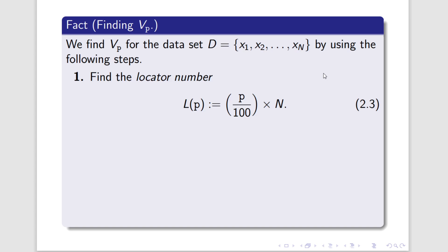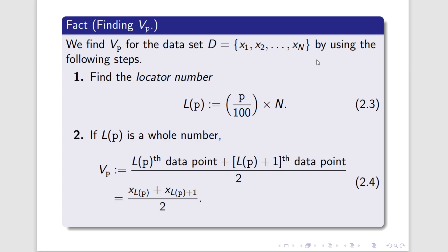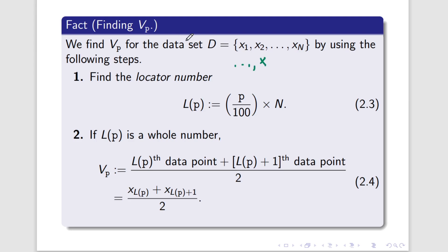Step 1: we need the locator number LP. LP is found by taking P, dividing it by 100, and then multiplying the result by N. If we do that, there are two possibilities. LP might be a whole number. If LP is a whole number, then we need to find the LPth and the (LP+1)th data points of D. Since D is organized from least to greatest, we just start counting X1, X2, X3, and keep going until we reach XLP and then the next data point, X(LP+1). We take those two data points, add them together, divide by 2, and that will be the Pth percentile.